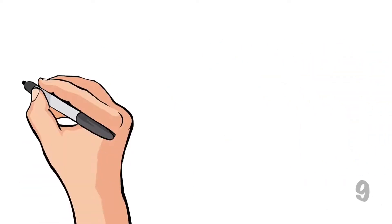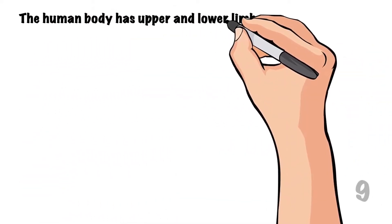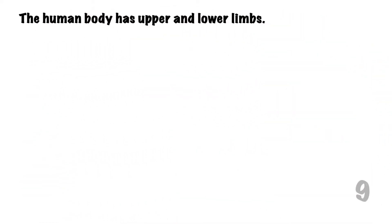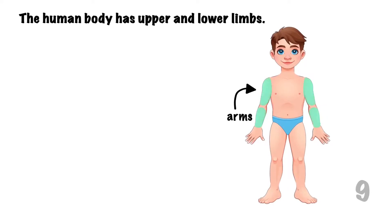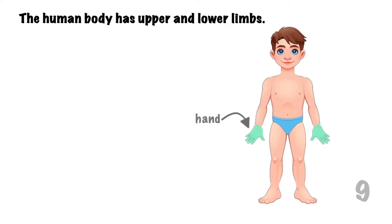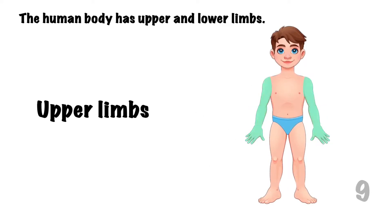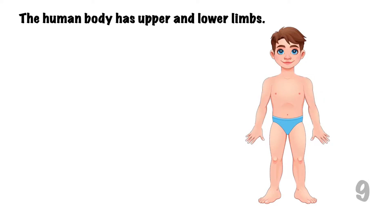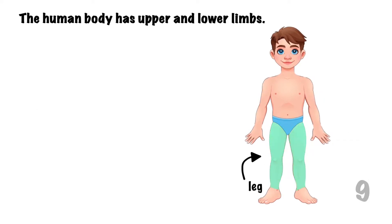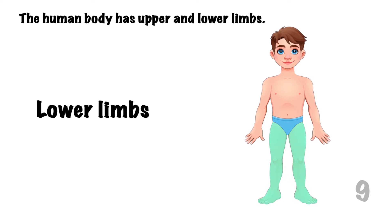The human body has upper and lower limbs. The arms, elbows, hands, and fingers make up the upper limbs. While the thighs, knees, legs, feet, and toes make up the lower limbs.